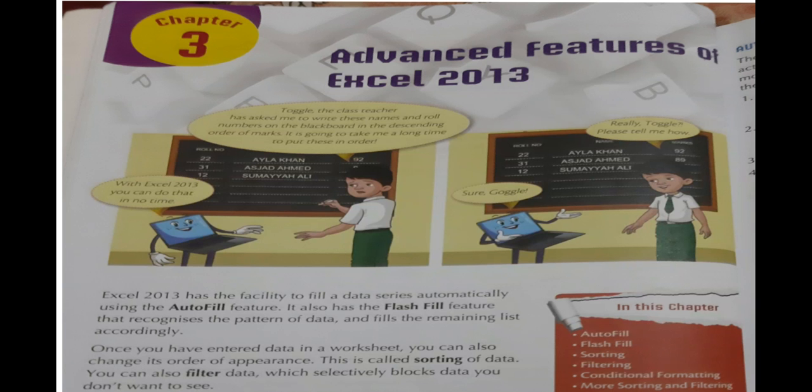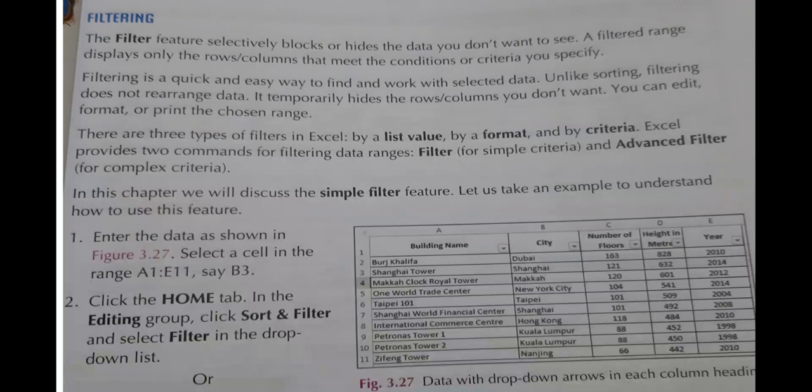You can also filter data which selectively blocks data you don't want to see. So basically the filter feature selectively blocks or hides the data you don't want to see. A filter range displays only the rows and columns that meet the condition or criteria you specify.